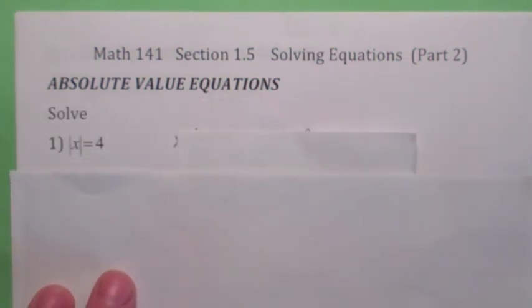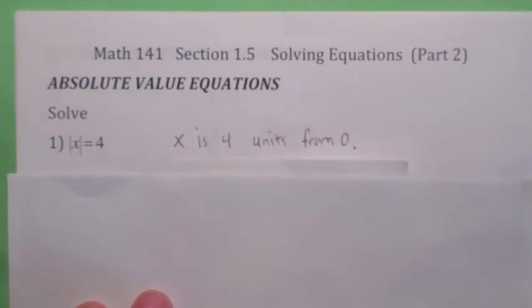Let's talk about absolute value equations. Remember this from your algebra classes? When you have an equation that says absolute value of x is 4, remember what that means? That means that x is 4 units away from zero. Now, it could be on either side.